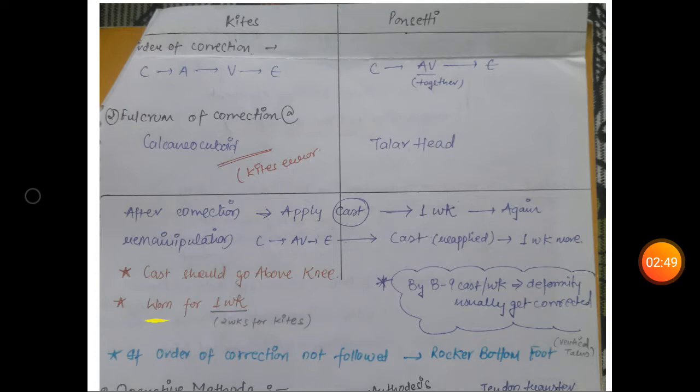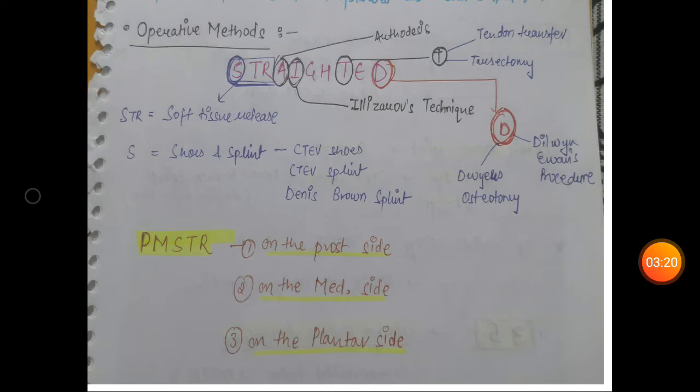If the order of correction is not followed—for example, you corrected cavus and then skip the A and V procedure and go for equinus—there is no use of this method and it will result in a deformity called rocker bottom foot in which you will get vertical talus.